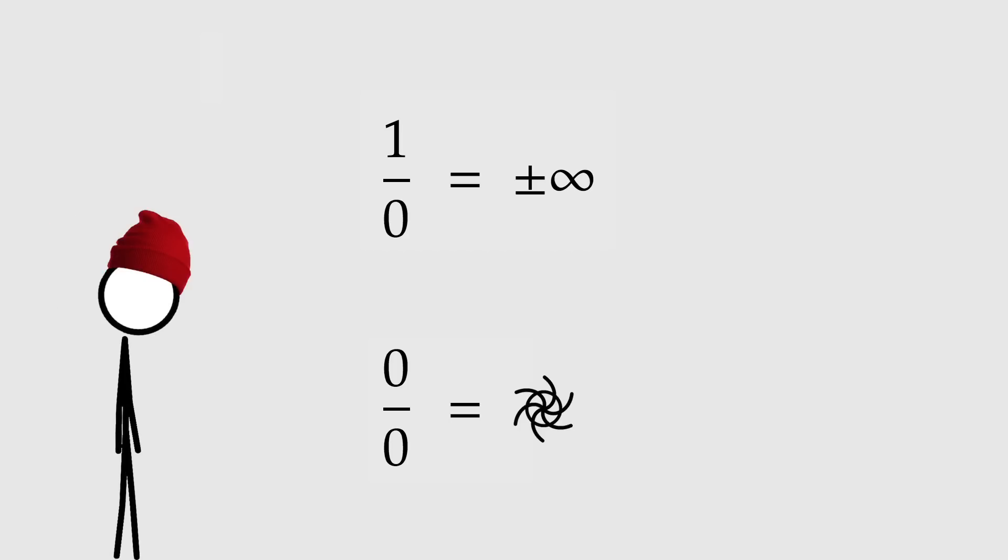Those are the two major problems with division by zero. One over zero having an identity crisis and zero over zero the black hole. So let me ask you a question. Which of them do you think is going to be easier to fix, easier to tame? One over zero or zero over zero? If you said one over zero, yeah, that's correct. So that's what we're going to do next. We're going to tame one over zero using something called an extended projection.